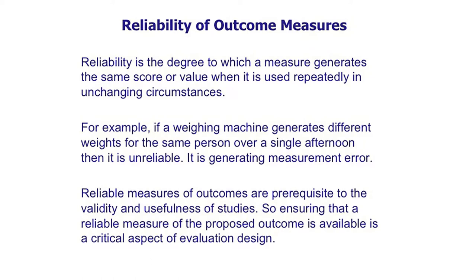When we measure outcomes, it is critical that we have reliable measures. By reliability we simply mean that the measure would give us the same score if used again and again in the same circumstances without any real change. For example, a weighing machine used with the same person in the same afternoon should give the same results. If it gave different weights repeatedly, we would say it was an unreliable measure — the measure itself is introducing measurement error. So it's critical when designing interventions that we ensure we have reliable measures of our primary outcome available.